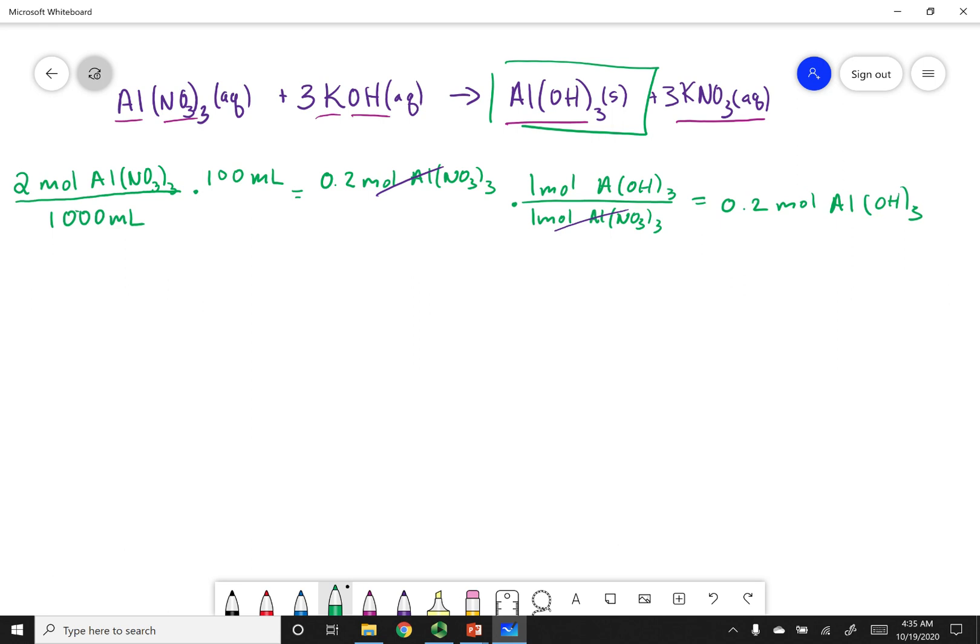Now, I got to do the same for my other reactant. I have two molar KOH. So instead of writing two molar, I'm going to write two moles of KOH per one liter or a thousand mil. Now, in this case, I have 200 mils of this solution. So again, the mils are going to cancel out. That's why I got moles in the last analysis. This corresponds to 0.4 moles of KOH. Now, based on my chemical equation, for every three moles of KOH, I'm going to generate one mole of aluminum hydroxide.